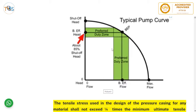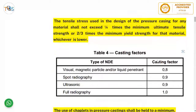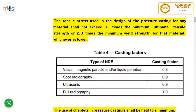The tensile stress used in the design of the pressure casing for any material shall not exceed one-quarter of the ultimate tensile strength or two-thirds of the yield strength of that material, whichever is lower. This gives a safety factor of roughly 3.5 to 4 times. This is consistent with ASTM Section II materials and ASME Section VIII, which also use allowable stress of approximately one-quarter of the minimum ultimate tensile strength.